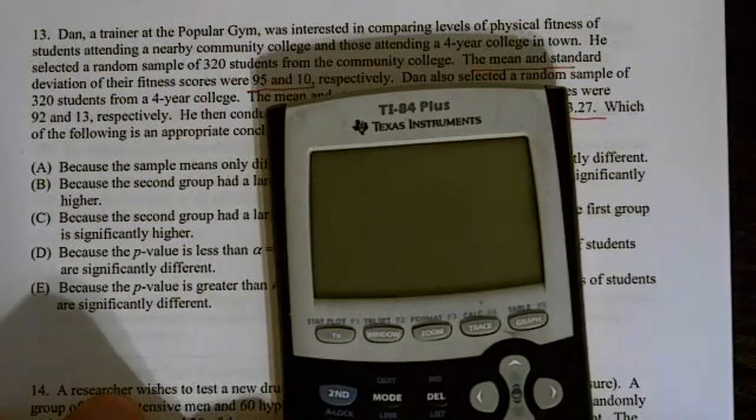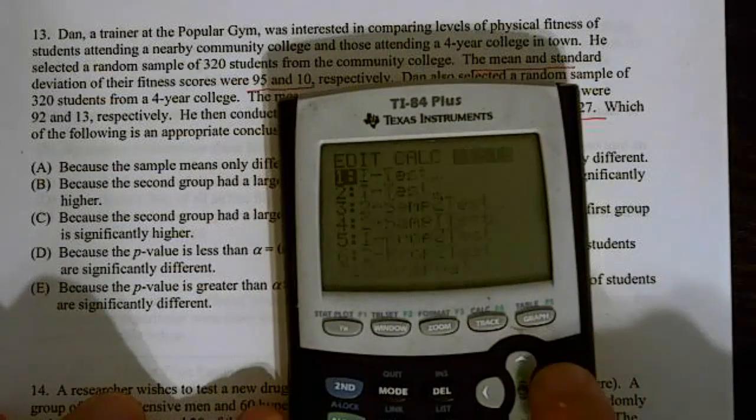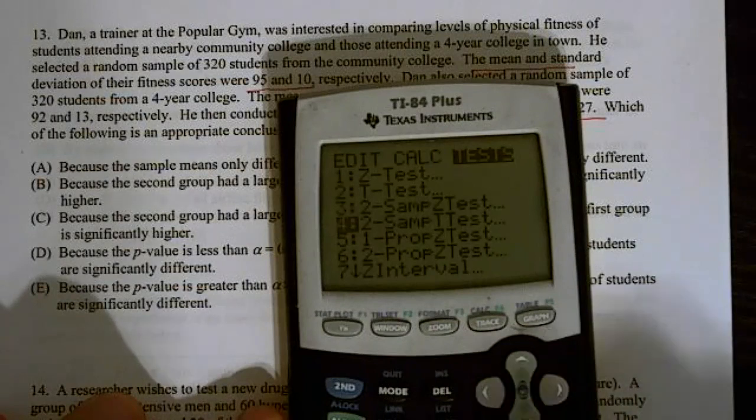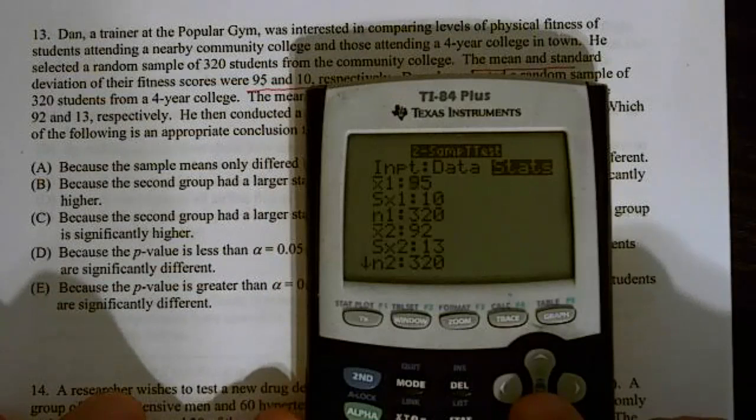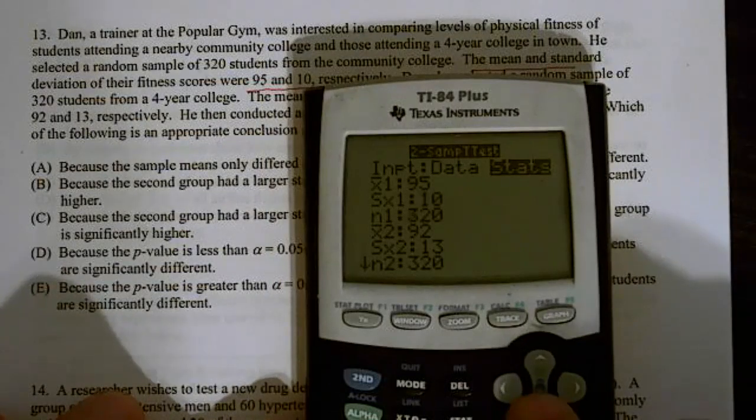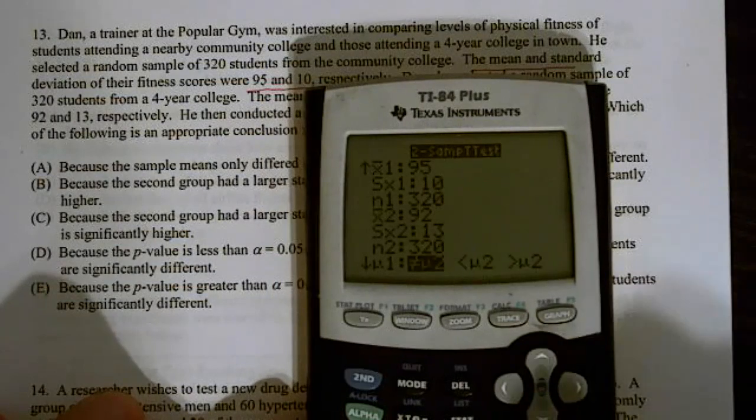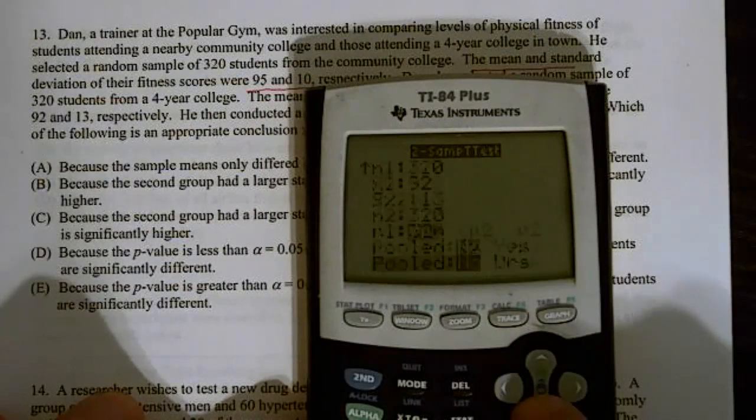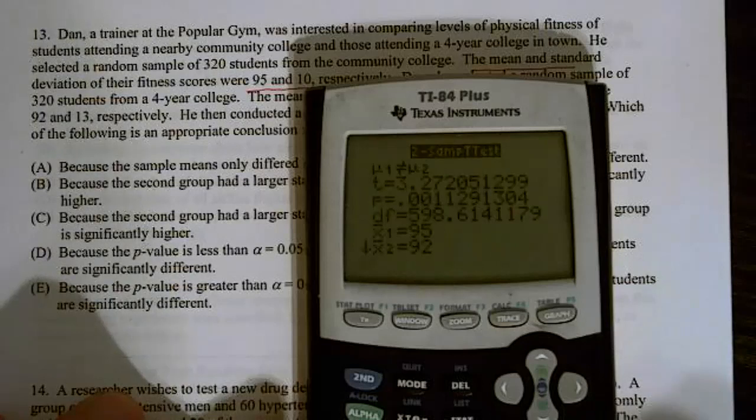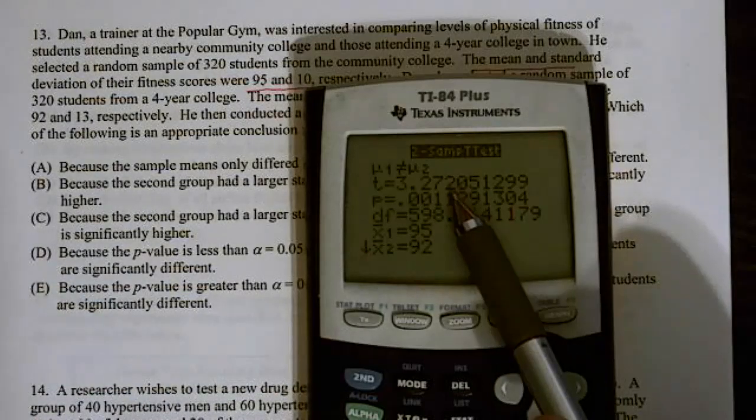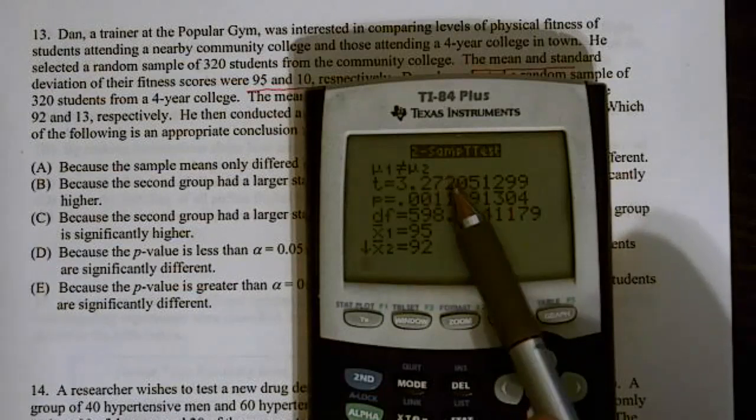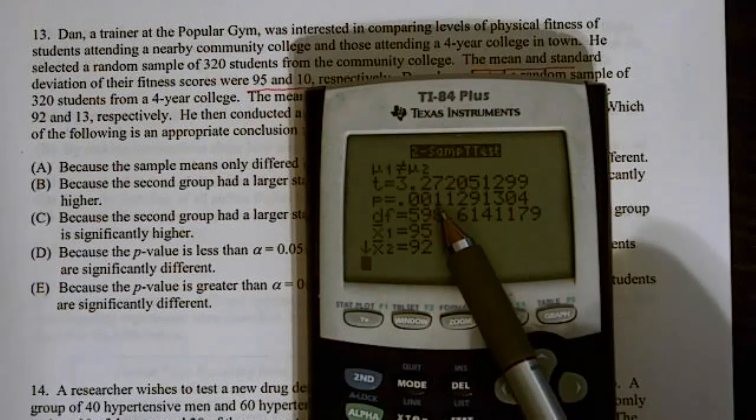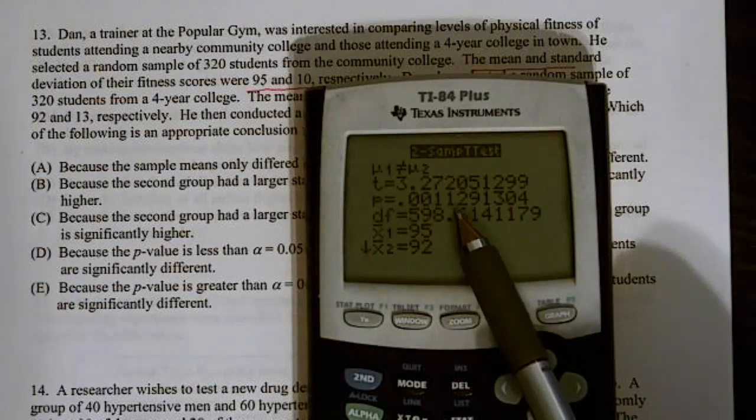I'm going to go ahead and run the entire test. Stat test, and we have a two-sample t-test, and we have 95 from the community college with a standard deviation of 10, sample size of 320. From four-year school, 92 was the X bar, 13, and 320. And then we had a two-sided test, so not equal to. We never pooled. We're going to calculate this. And I end up getting that t-value of 3.27, the t-statistic of 3.27 and a p-value of 0.0011.